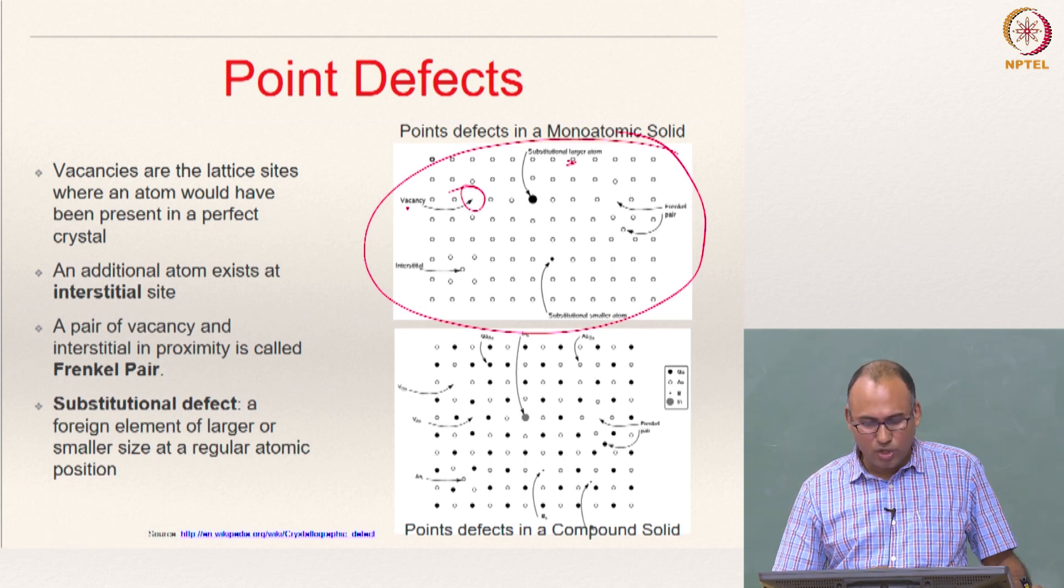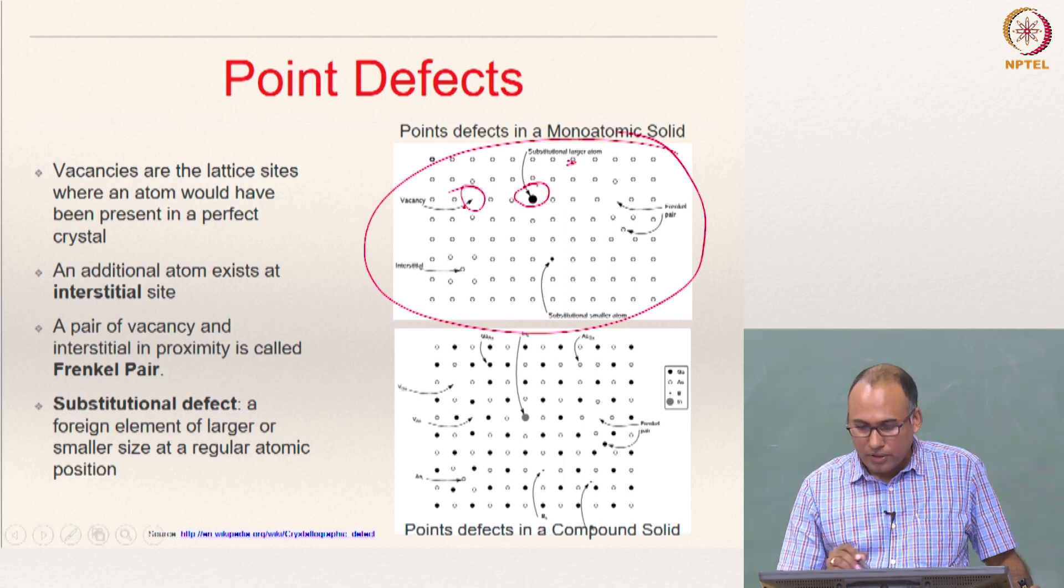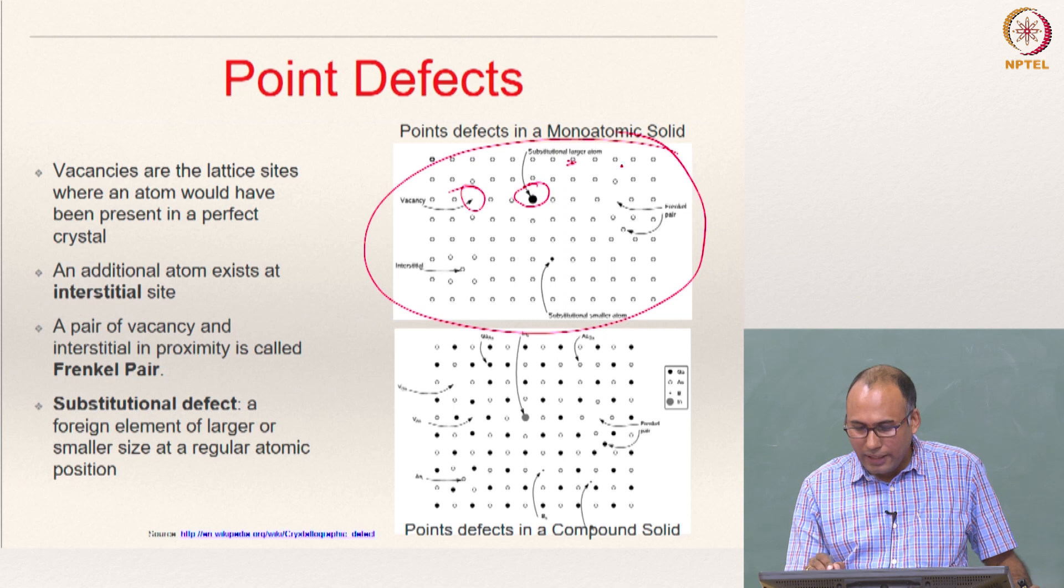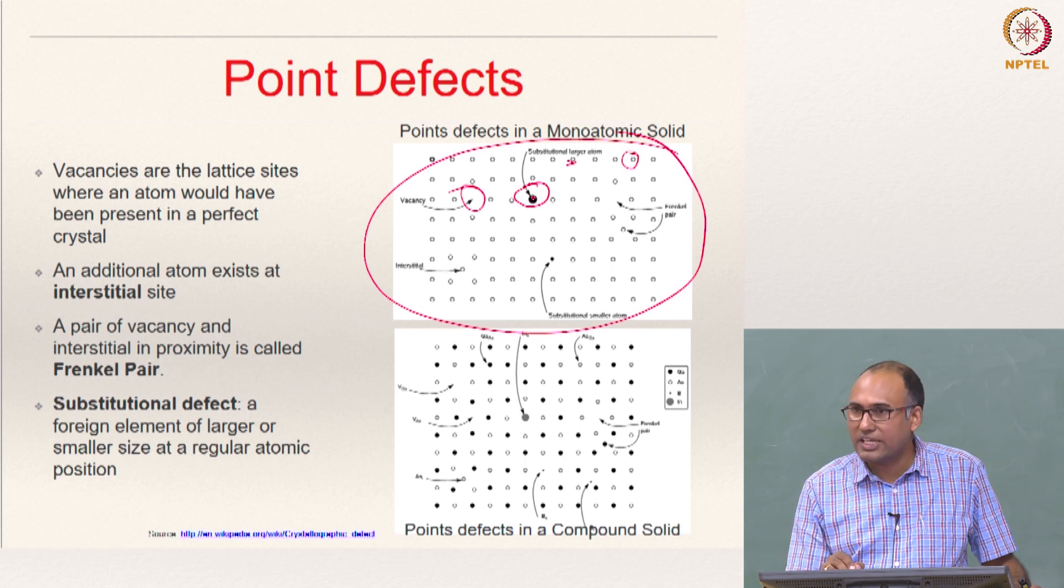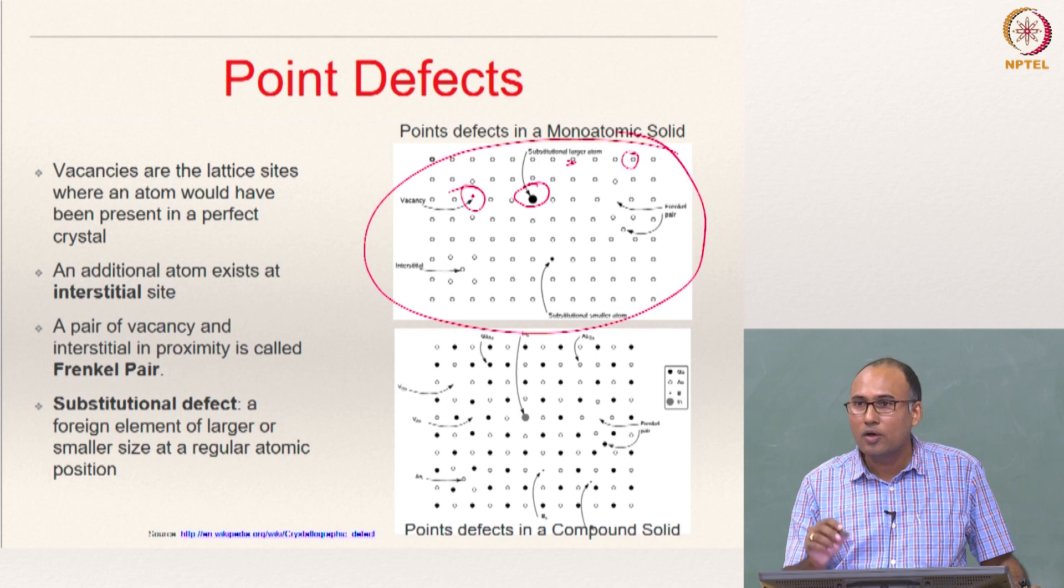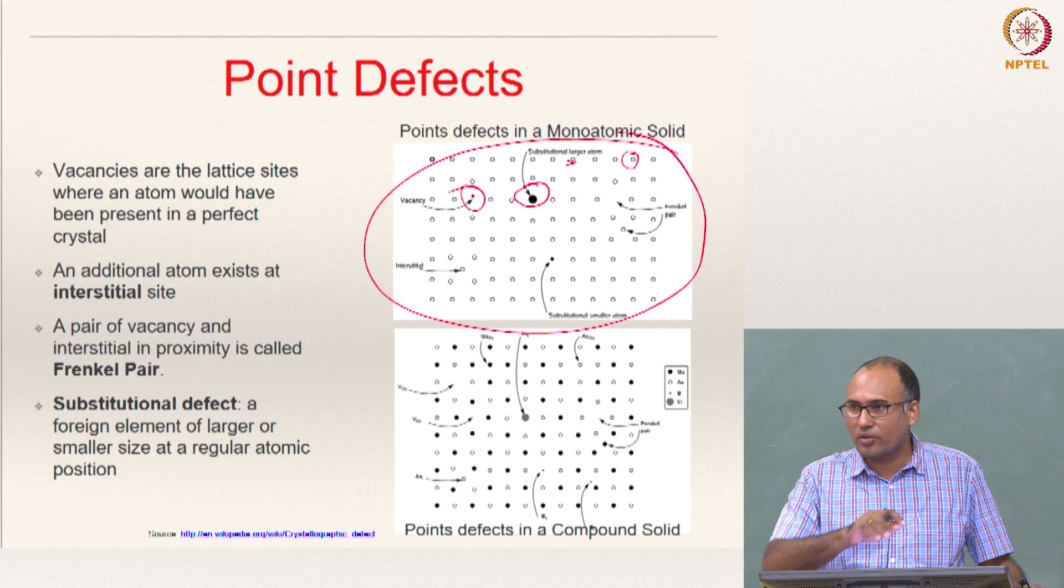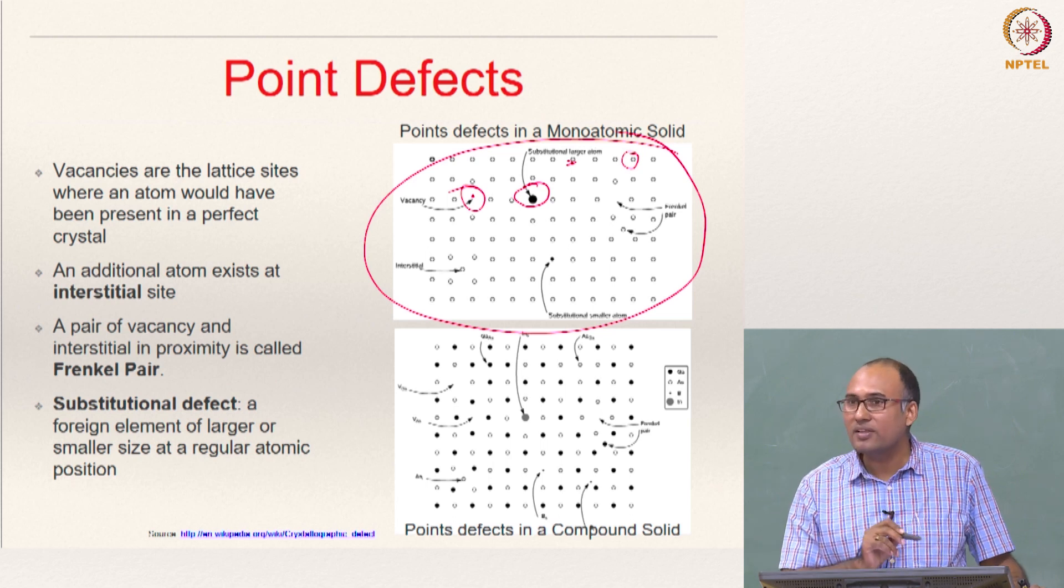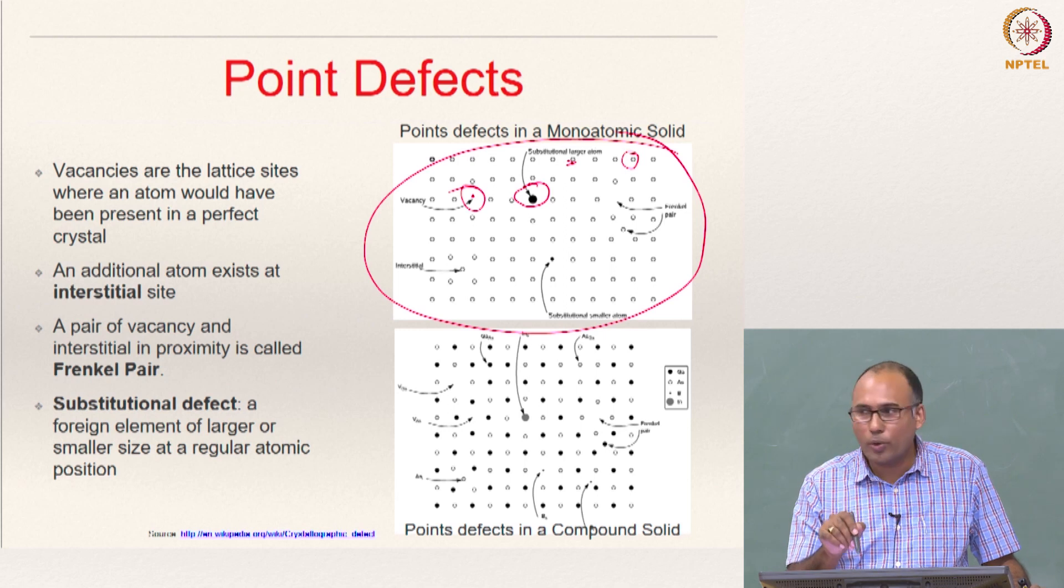Such a defect is called vacancy. And here you see that there should be an atom of this type, but some other foreign atom which is larger than this one is actually coming and sitting, is actually substituting for the position of the parent atom. It is substituting the parent atom and hence it is called substitutional impurity, substitutional point defect.